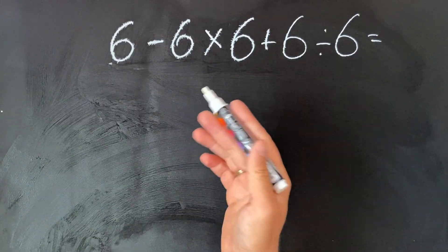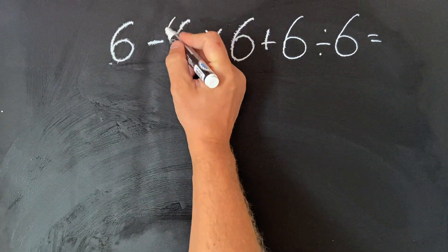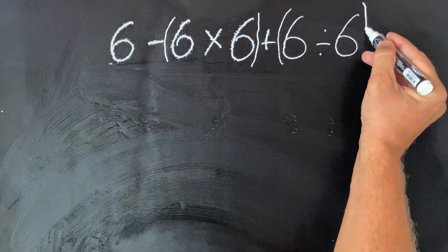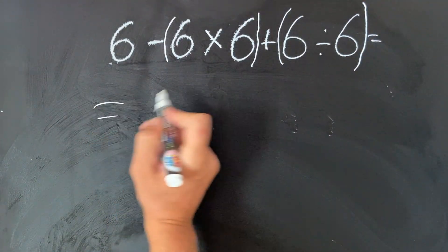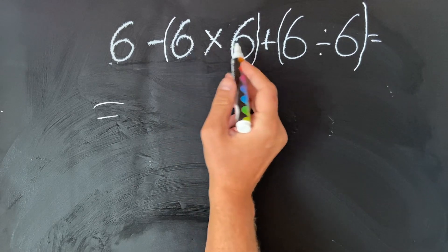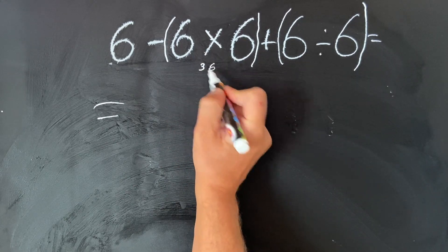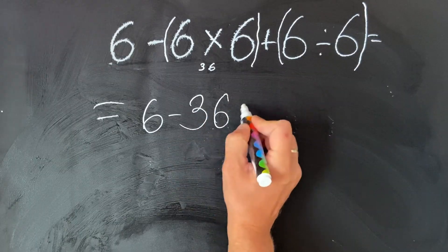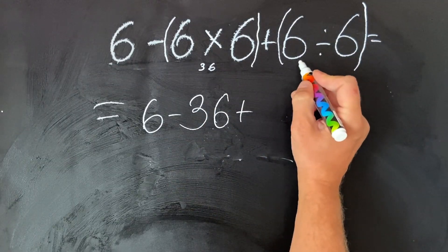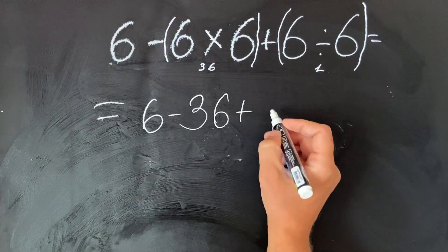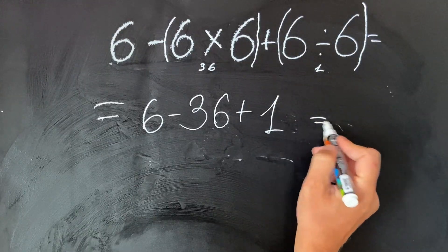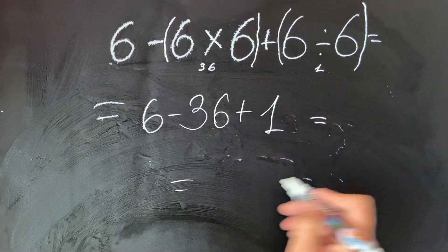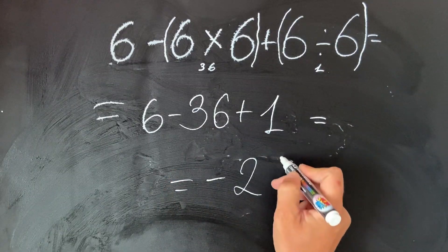To visualize this better, I always use brackets around the operation that have priority. So we get 6 multiplied by 6 is 36, so you get 6 minus 36 plus 6 divided by 6 is 1, and plus 1. We get the answer: 6 minus 36 is minus 30, plus 1 is minus 29.